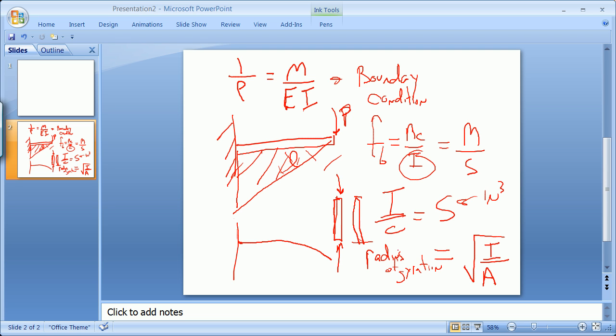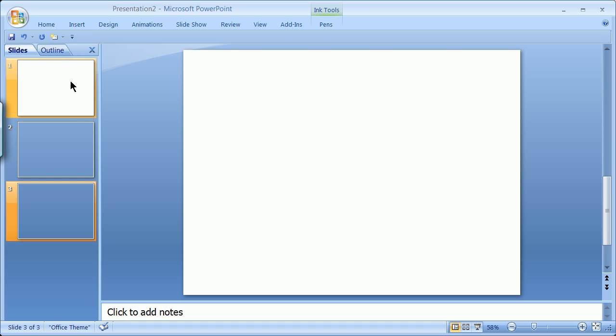That radius of gyration is going to be one other number that essentially tells you how resistant this thing is to buckling. Because we use this typically when we're talking about how stress is set up in a column. I'm going to shoot through here and talk about radius of gyration in different directions. We start talking about not necessarily your standard regular old two by four. This works a lot nicer in PowerPoint than in smooth board.